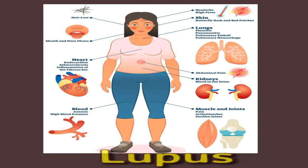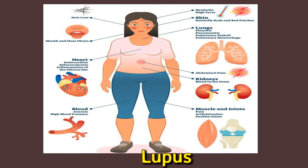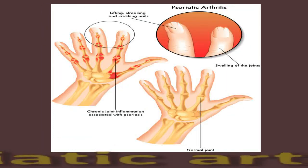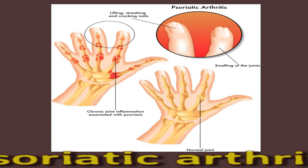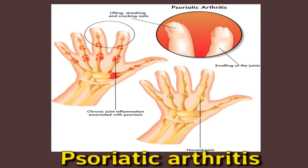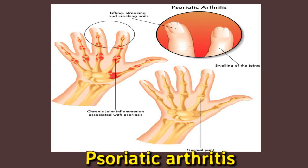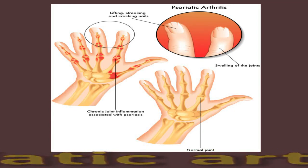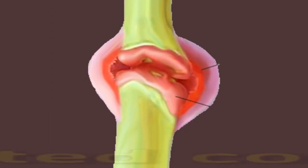Lupus: as well as affecting a person's joints, this form of polyarthritis often impacts the skin, kidneys, and the central nervous system. Psoriatic arthritis: as its name suggests, psoriatic arthritis can be present in people who have the skin condition psoriasis. Sometimes arthritis develops first. Symptoms to look out for can include a scaly red rash and the fingers and toes swelling into a sausage shape on one side of the body only.